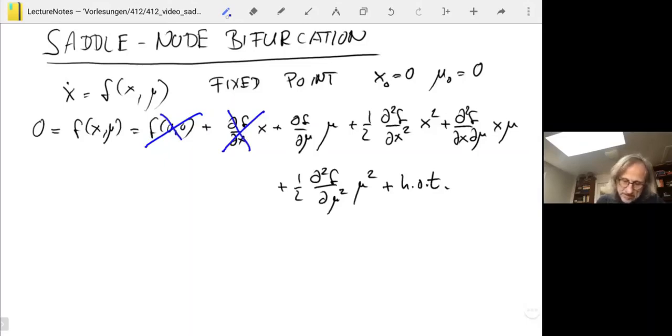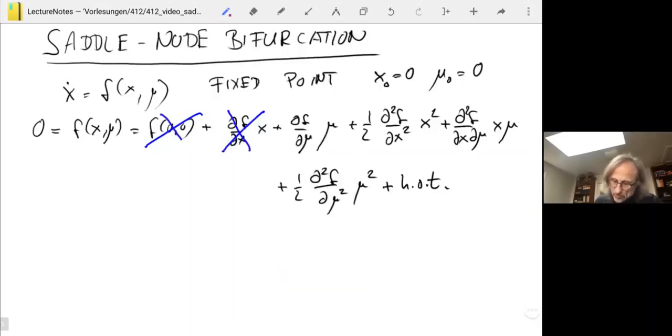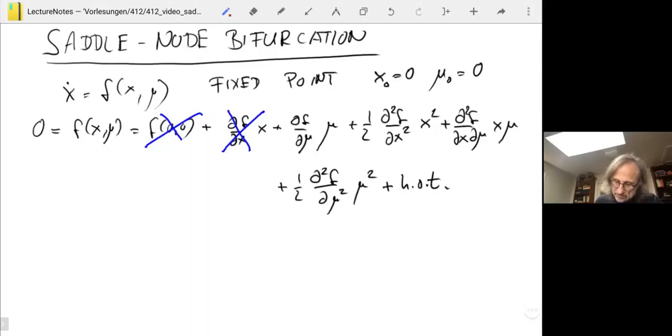Now we have a whole bunch of other terms and it's not clear. None of them has to be zero, there's no information that we have. What we do have, however, is the assumption that we are doing a local analysis, meaning mu is actually small, as is x. But what we don't know is how x and mu are related. Is x large compared to mu, small compared to mu? We do not know.